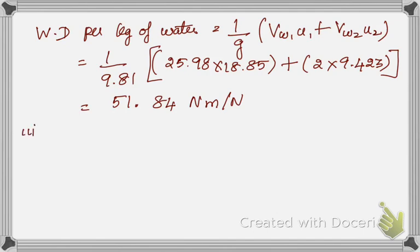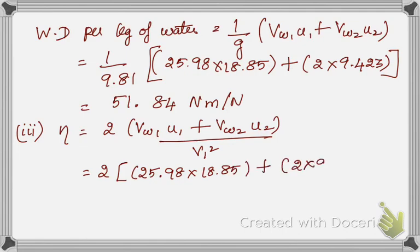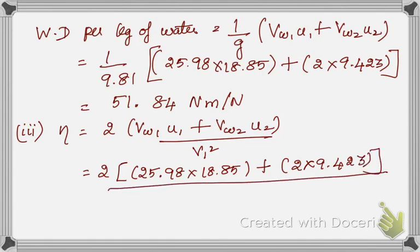For the third part, efficiency: eta = 2 × (vw1·u1 + vw2·u2) / v1². Substituting: eta = 2 × (25.98 × 18.85 + 2 × 9.423) / 30² = 1.013, so the efficiency is approximately 101.3% — we write eta as approximately 100%. Happy learning, thank you.